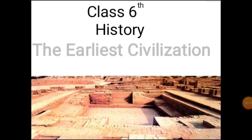Good morning students. We continue with chapter number four on the earliest civilization. We already covered some topics in the previous class — how the Indus civilization was discovered, which area they settled in, what type of people lived there, and their town planning. In this class we are going to cover their houses, agriculture, script, and the decline.